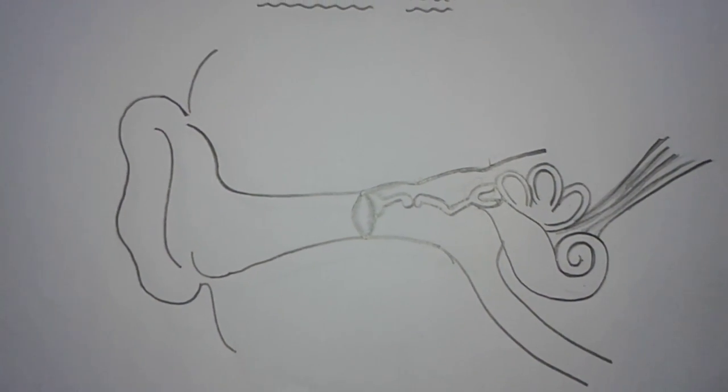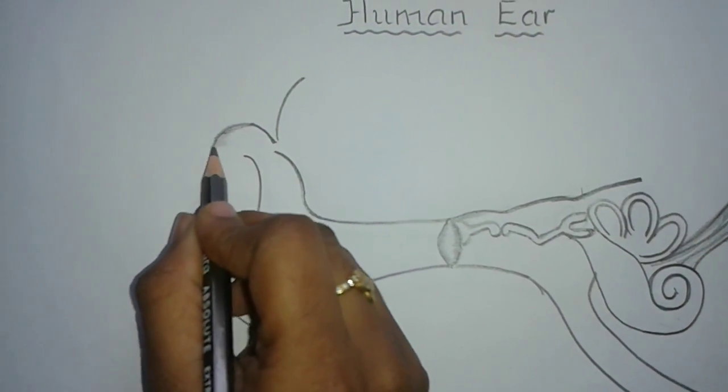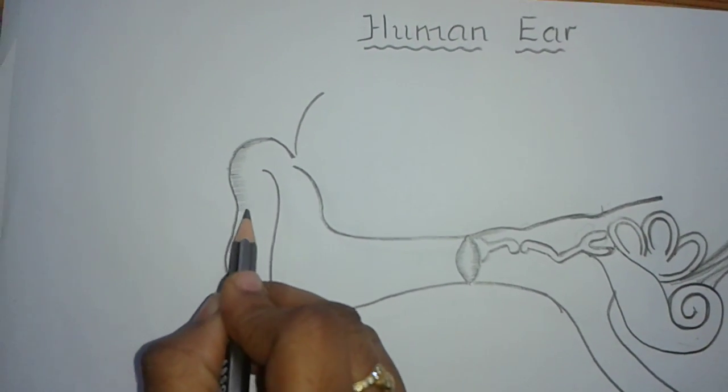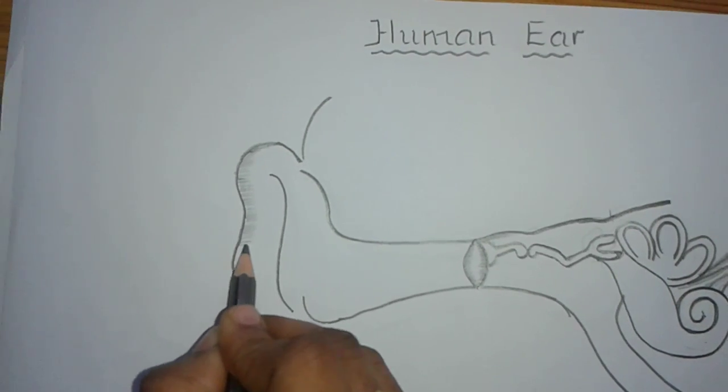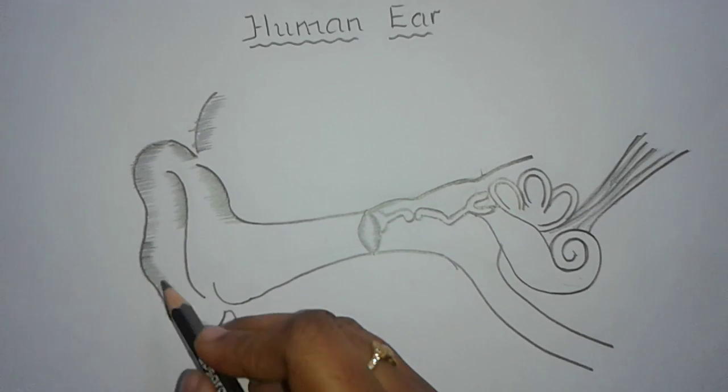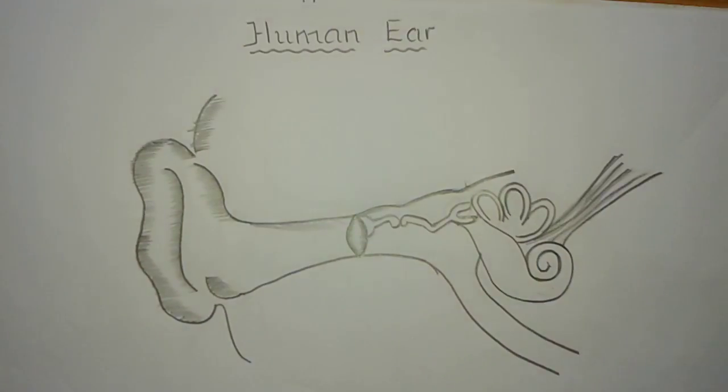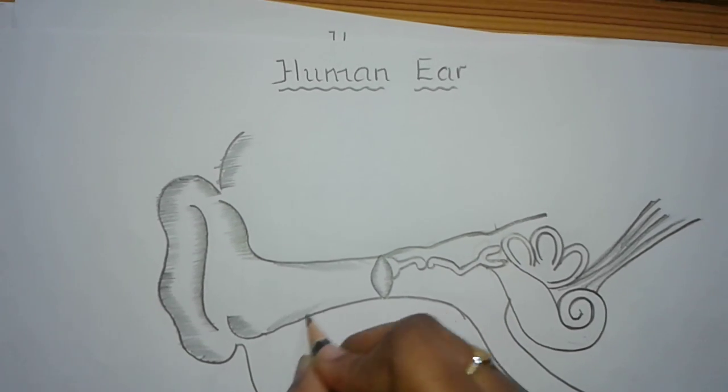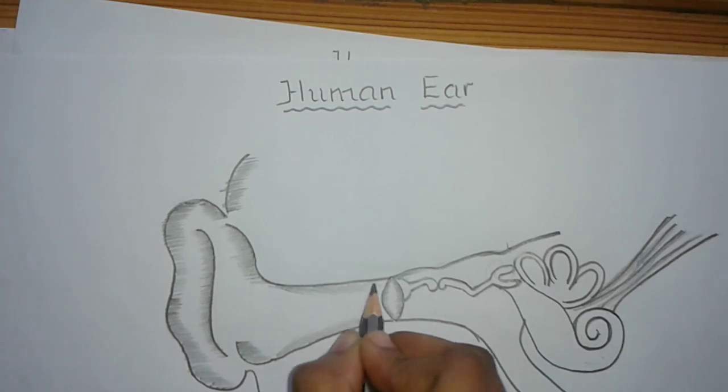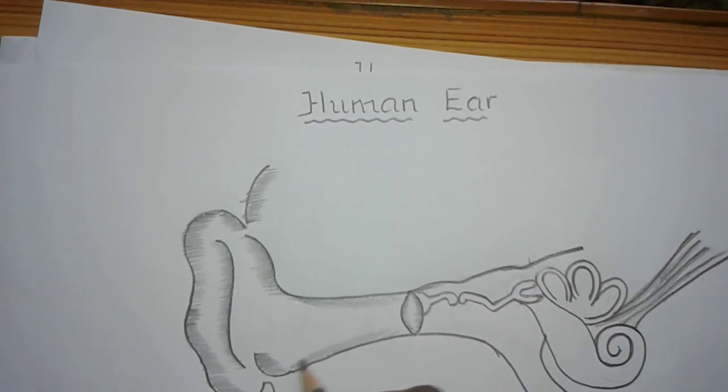Now let us make it more beautiful by shading like this. Shade the pinna like this to get the 3D dimension. Draw the hair in the auditory canal which prevents organisms, germs, and dust from entering. The wax which is produced in the auditory canal entangles the dust.